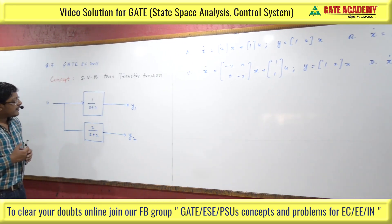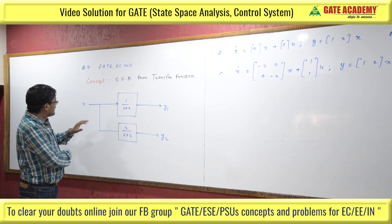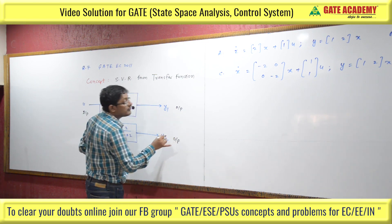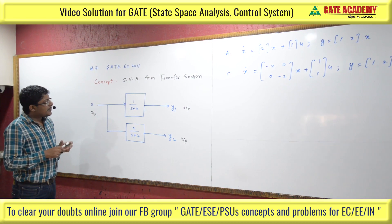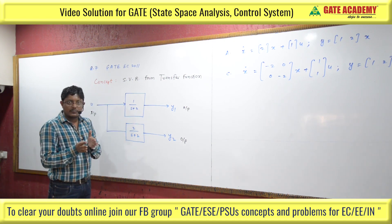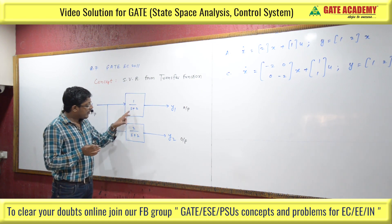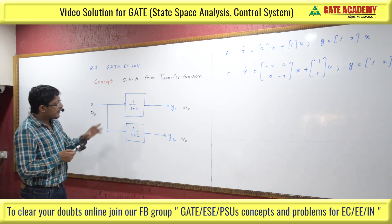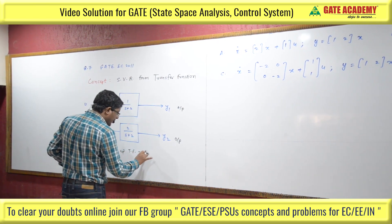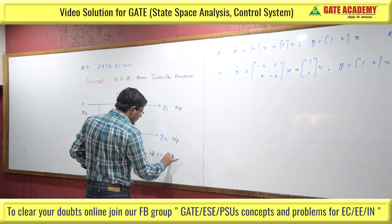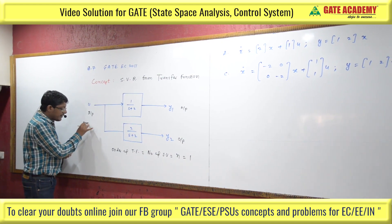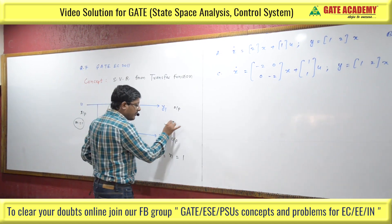Now, importantly, the single input is U, and the output is Y. If you have a transfer function where the order is 1 — meaning the maximum power of s is 1 — then the order of the transfer function equals the number of state variables, which is 1. The number of inputs M is 1, and the number of outputs P is 2.